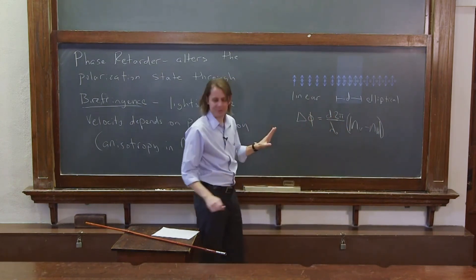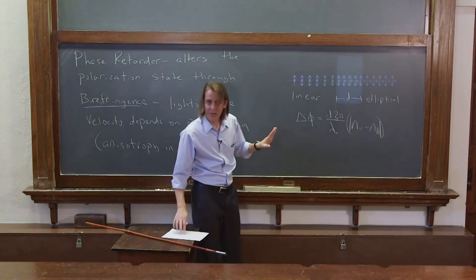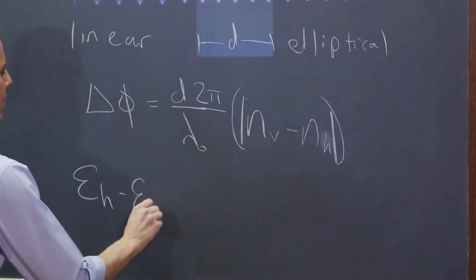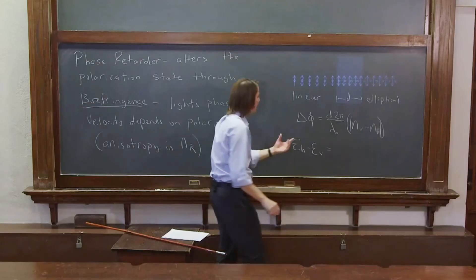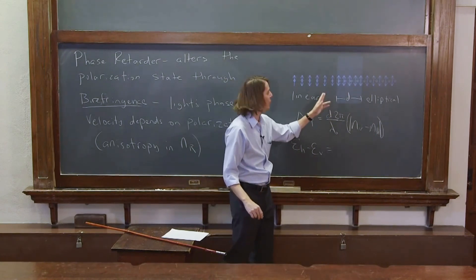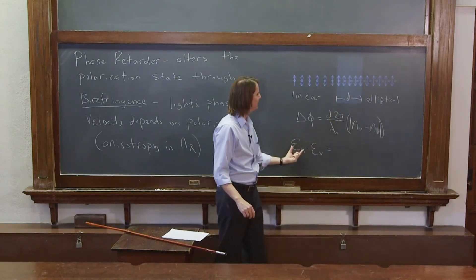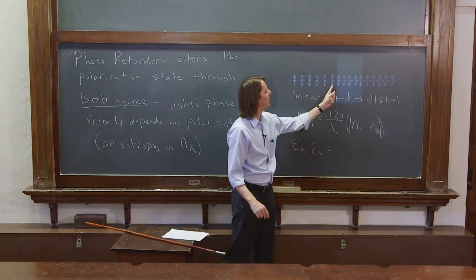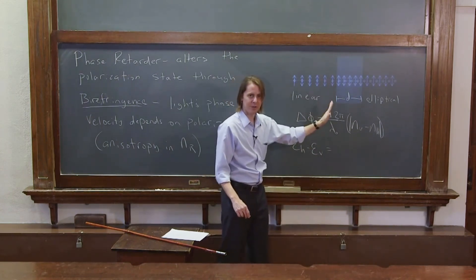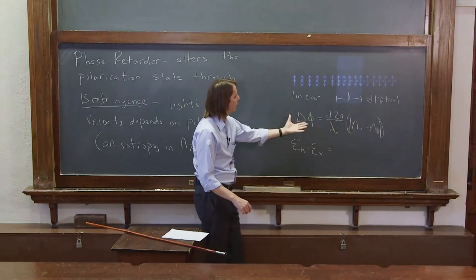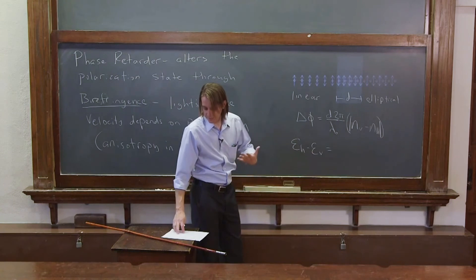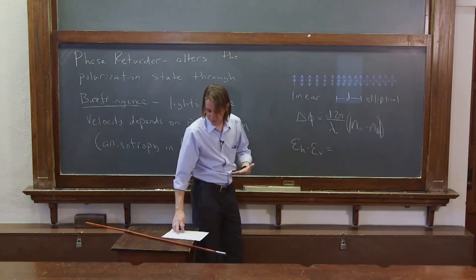But if you wanted to get real specific, then we could write it more specifically. You could say, I want to write it this way, εₕ minus εᵥ, and say these are the individual phase shifts each one gets. This is now the phase shift it builds up compared to what it would have done had it just gone through vacuum. And this one is the phase shift this one would have done had it just gone through vacuum. And you subtract those, and that's a more specific form of the phase shift.